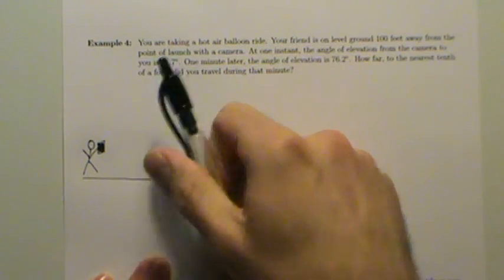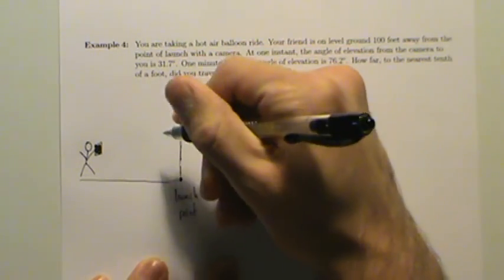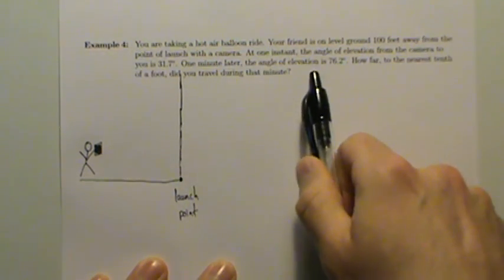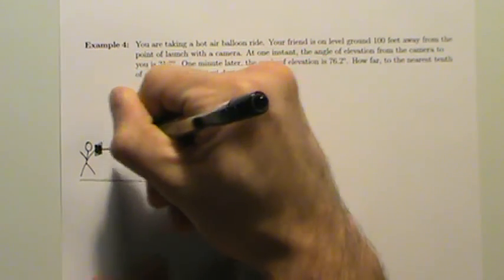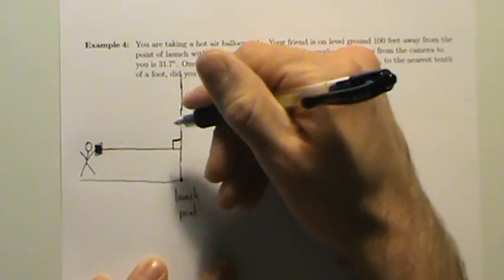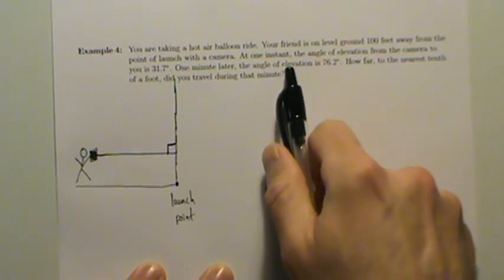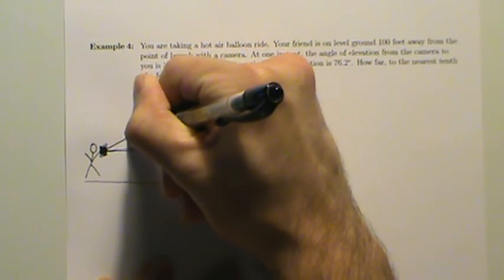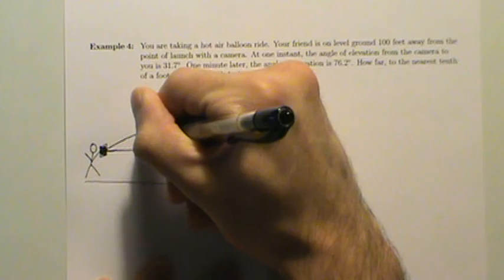At one instant the angle of elevation from the camera to you is 31.7 degrees — we're up in the hot air balloon. To define angle of elevation, we need a flat horizontal line from the camera. That's a right angle because the balloon is going straight up, and we measure the angle of elevation from that horizontal line.